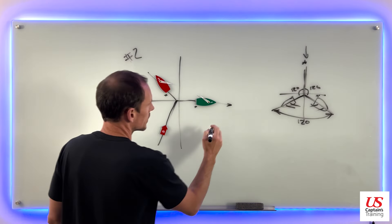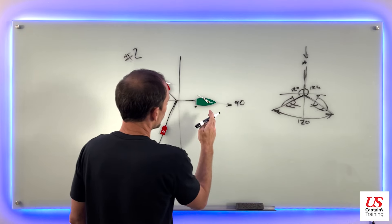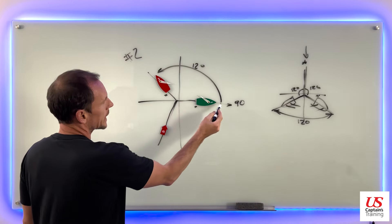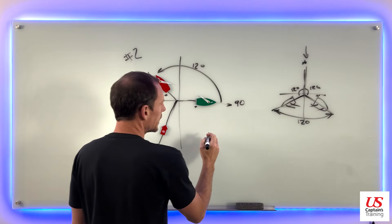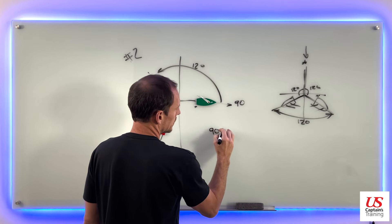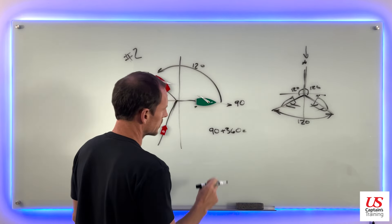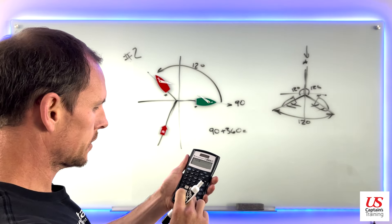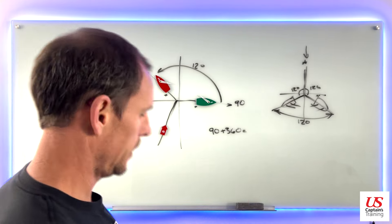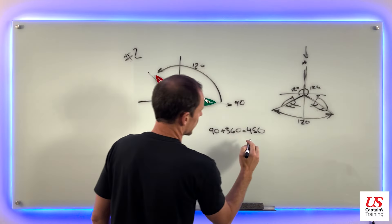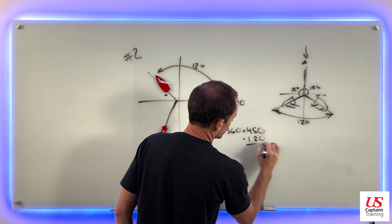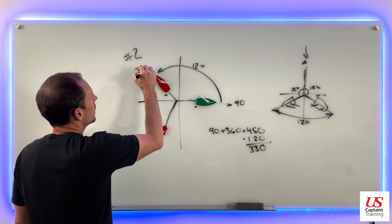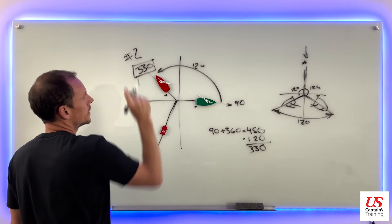Our course here is 90 degrees. We know we need to go 120 degrees, but again we're going to go beyond zero. To make the math easier, let's go 90 plus 360, which gives us 450. Now subtract 120 — 450 minus 120 equals 330. So our new course is 330.